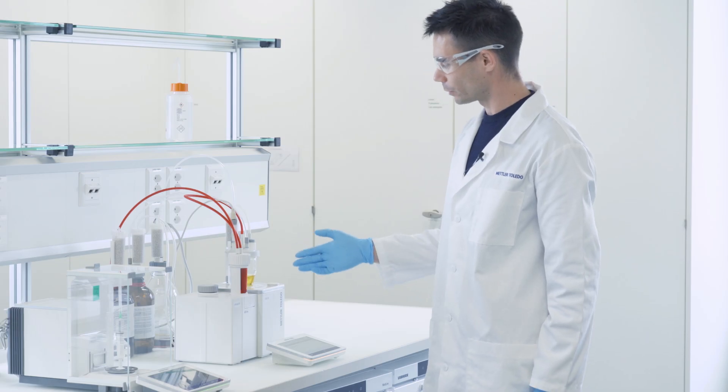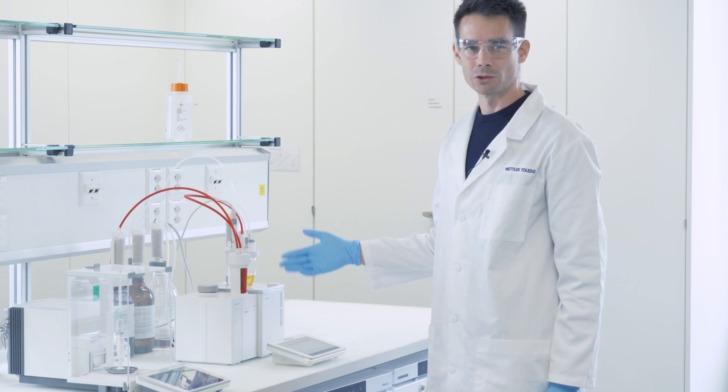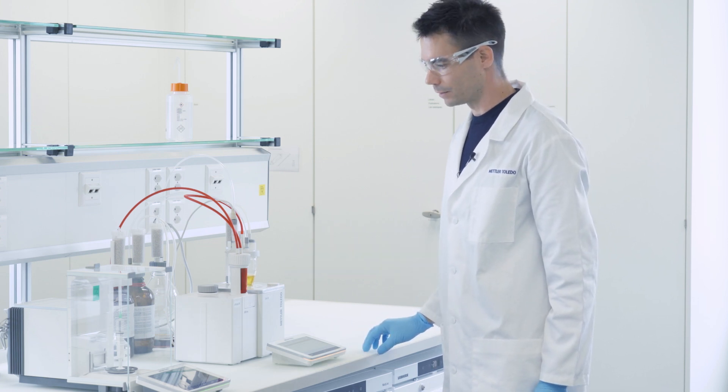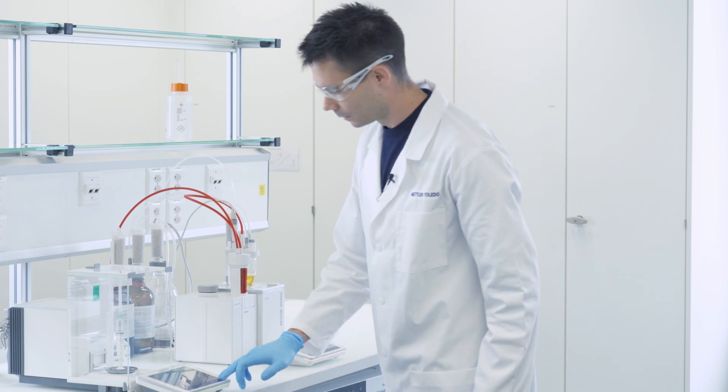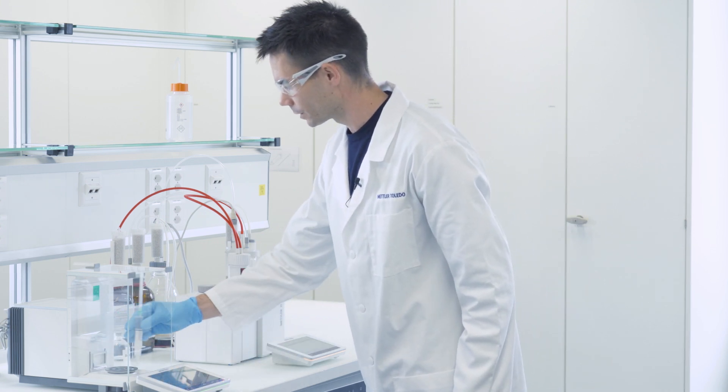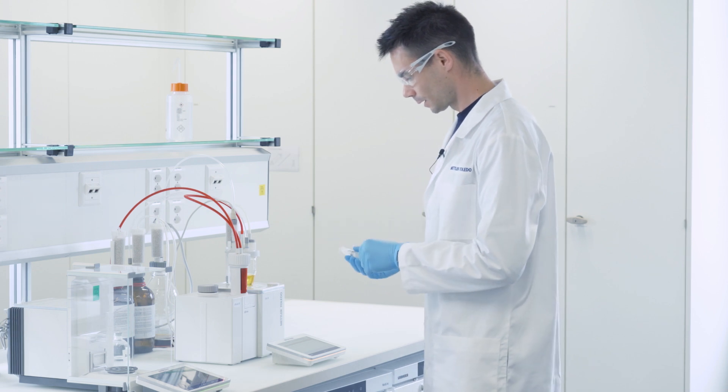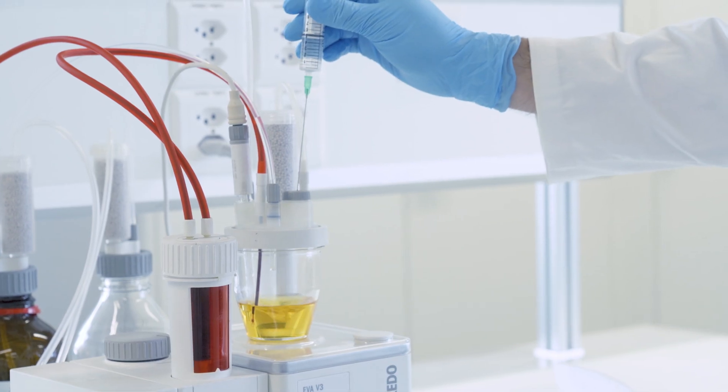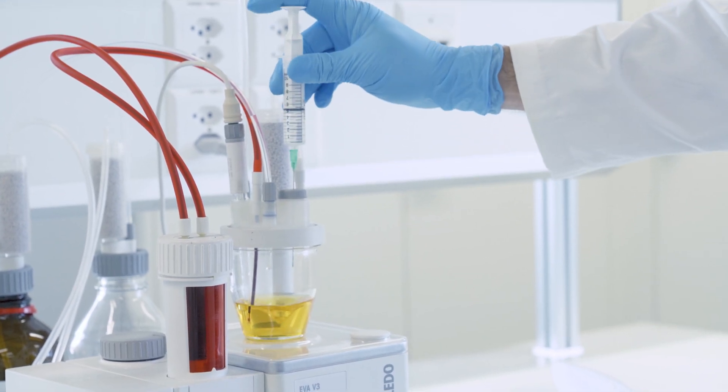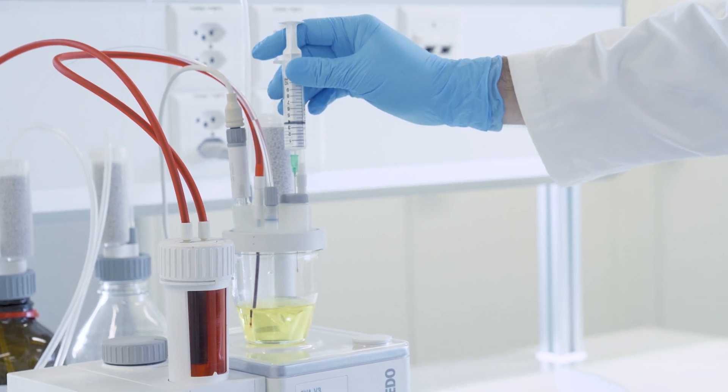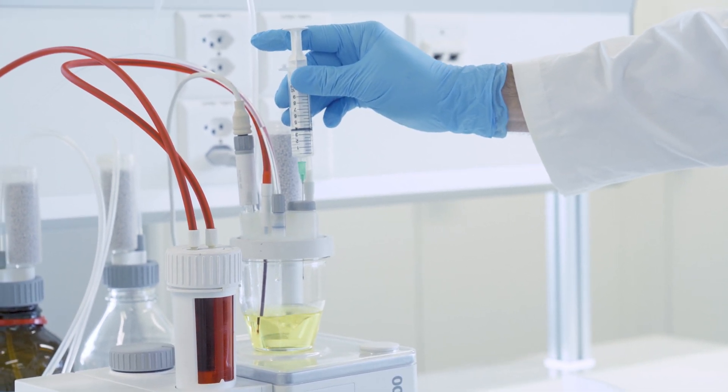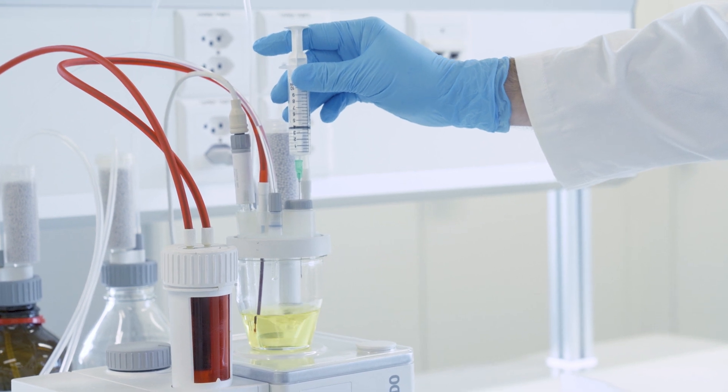From now on the titrator will detect any water that we inject and it will start the titration as soon as we have injected the sample. We get our syringe and inject an appropriate amount of the sample. Make sure to pull the plunger back a little bit to avoid a droplet at the end of the needle.